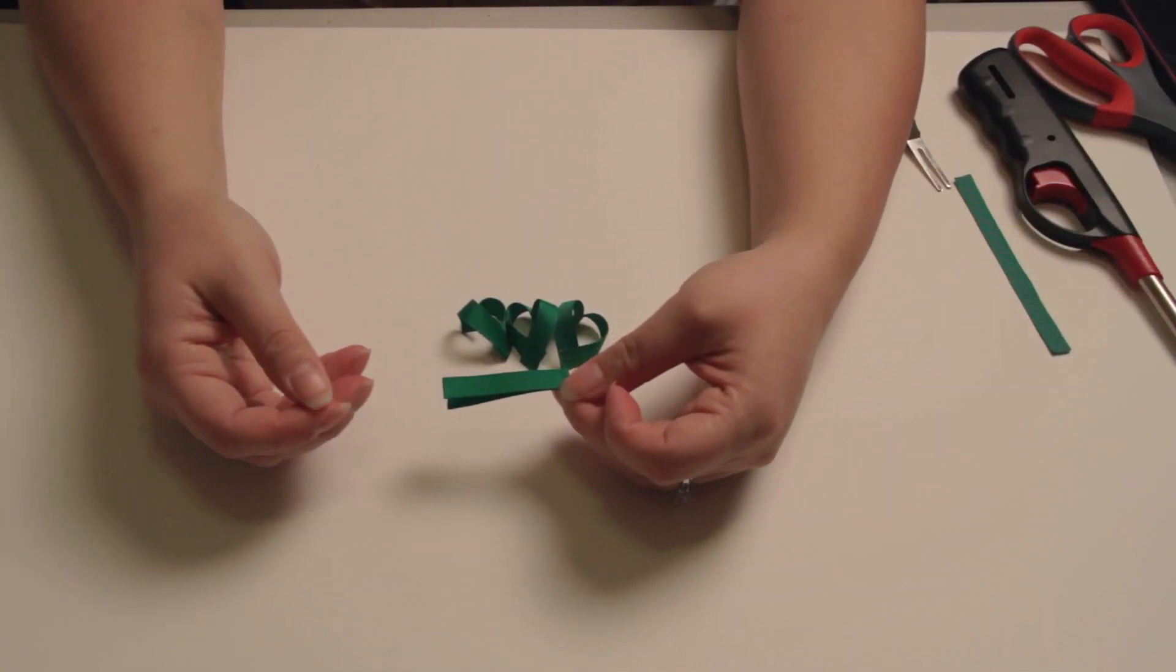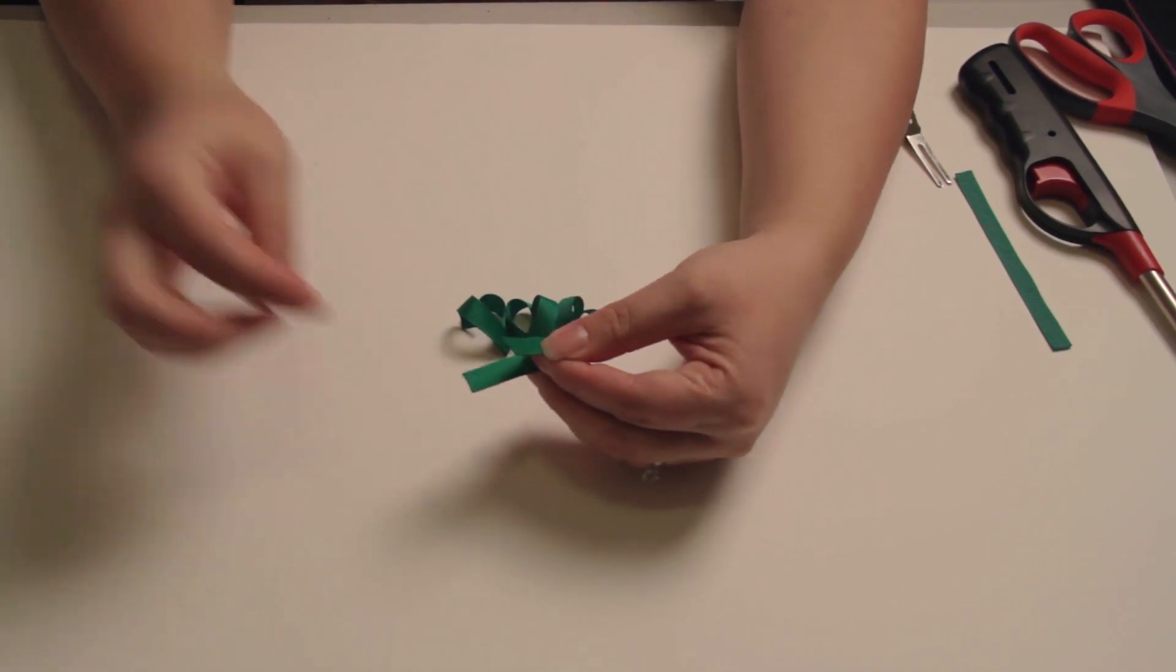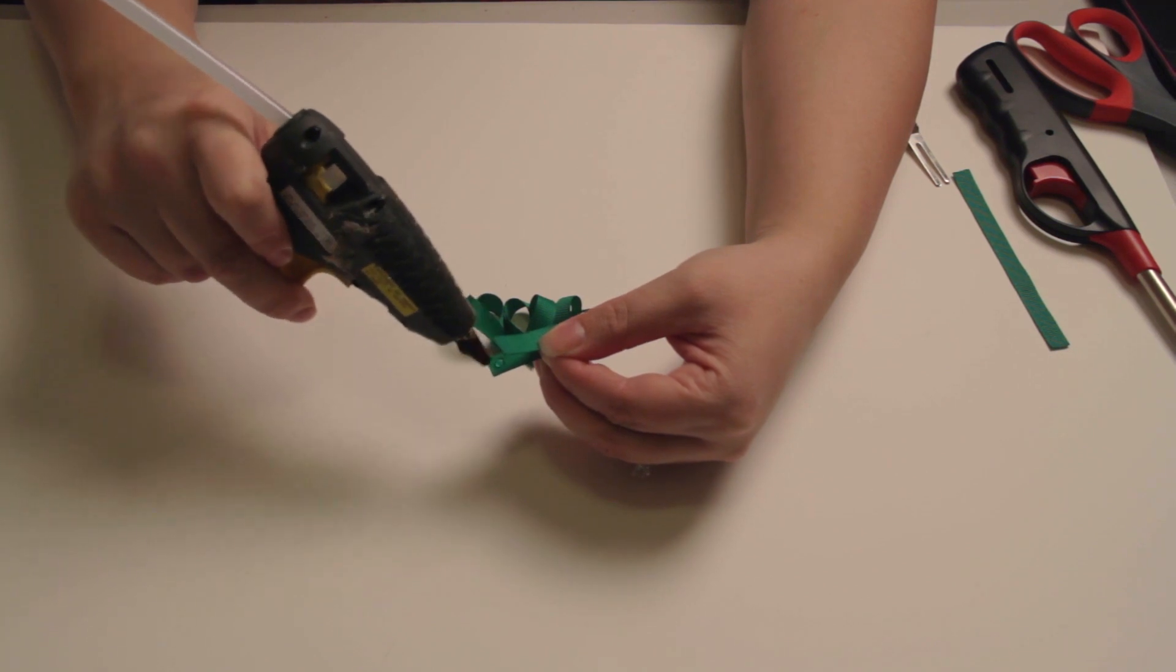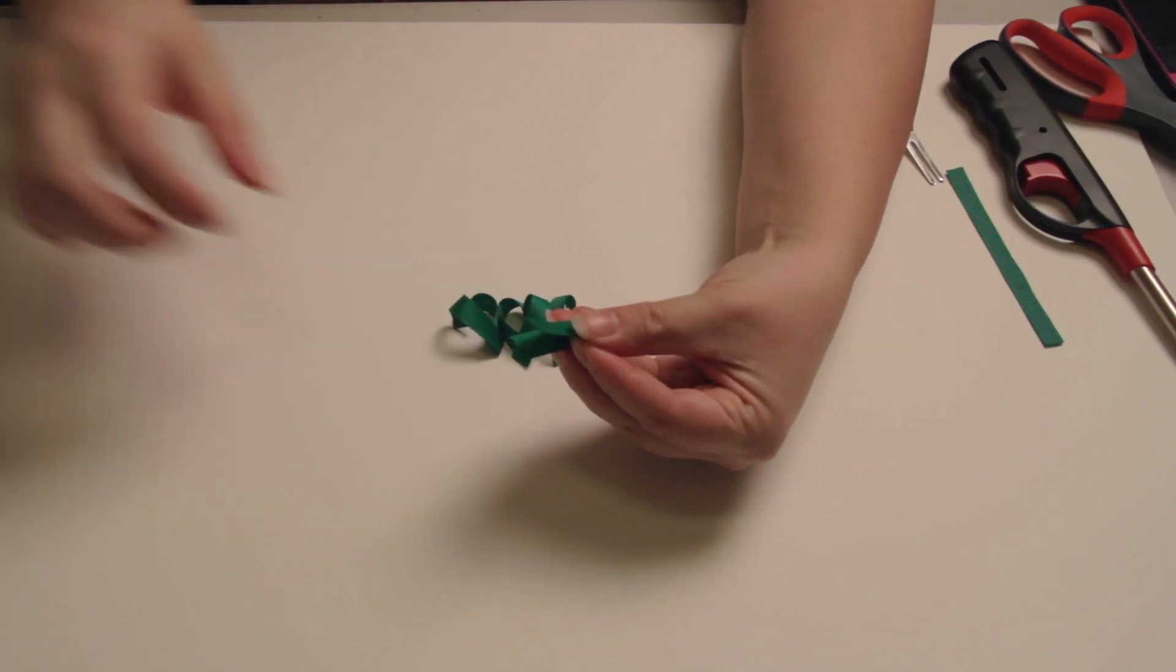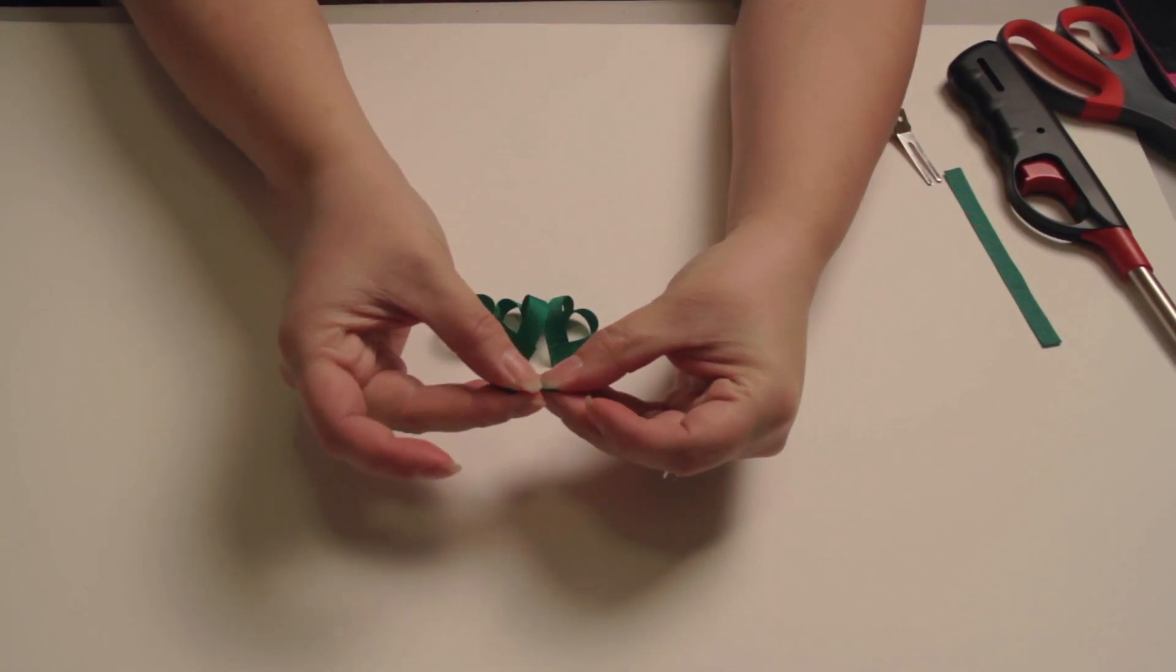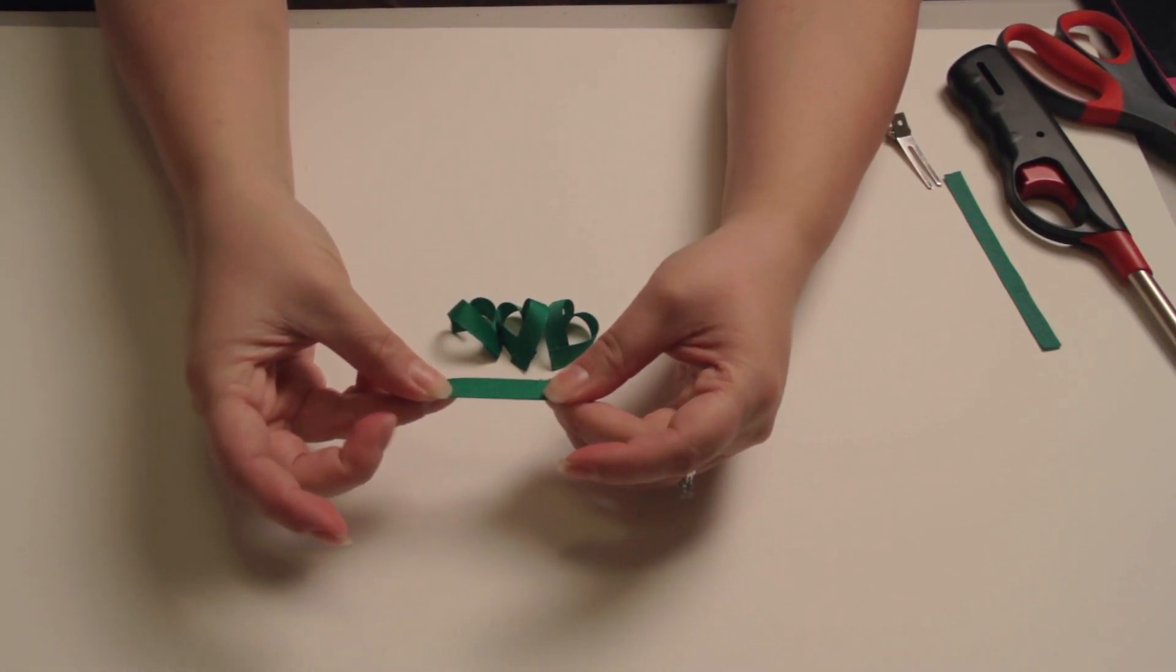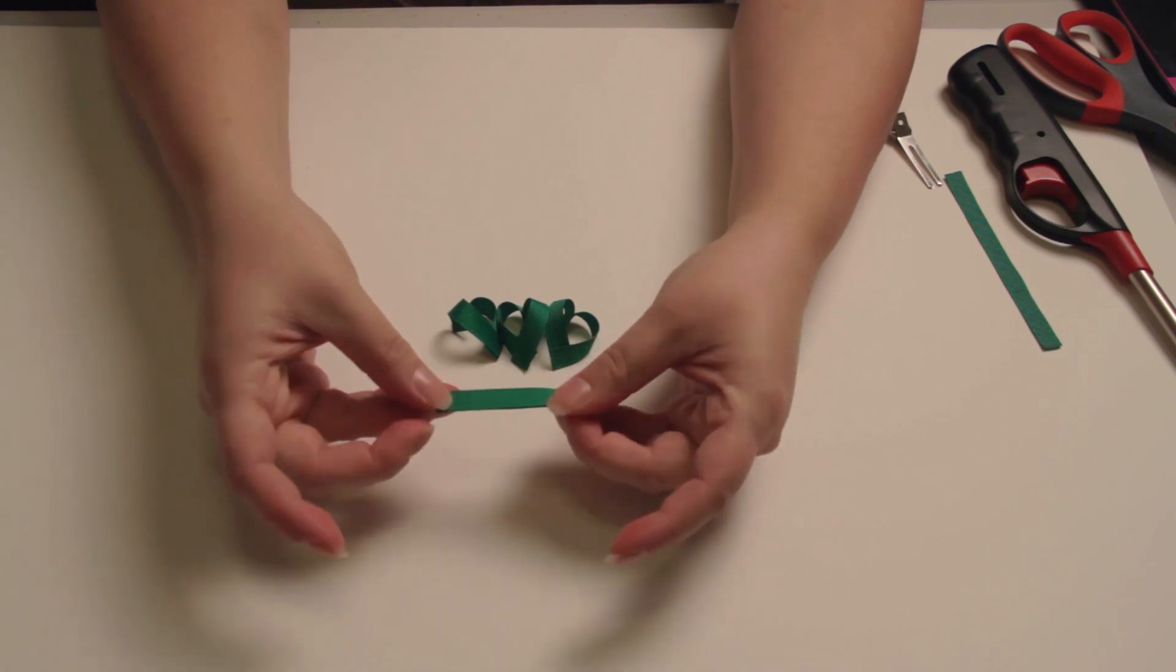Alright so on your fourth piece of ribbon you want to glue the bottom together as well as the top so that it's just one piece of ribbon folded in half glued on both ends.